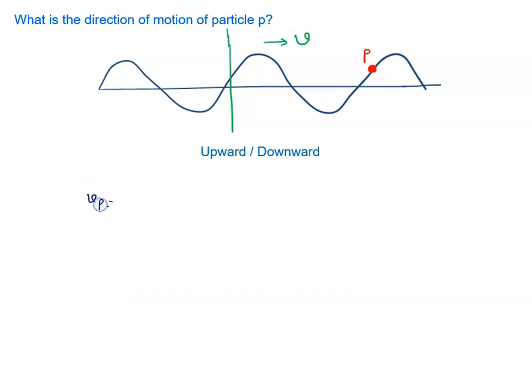We will say velocity of the particle is given by minus v dy by dx at that point P.